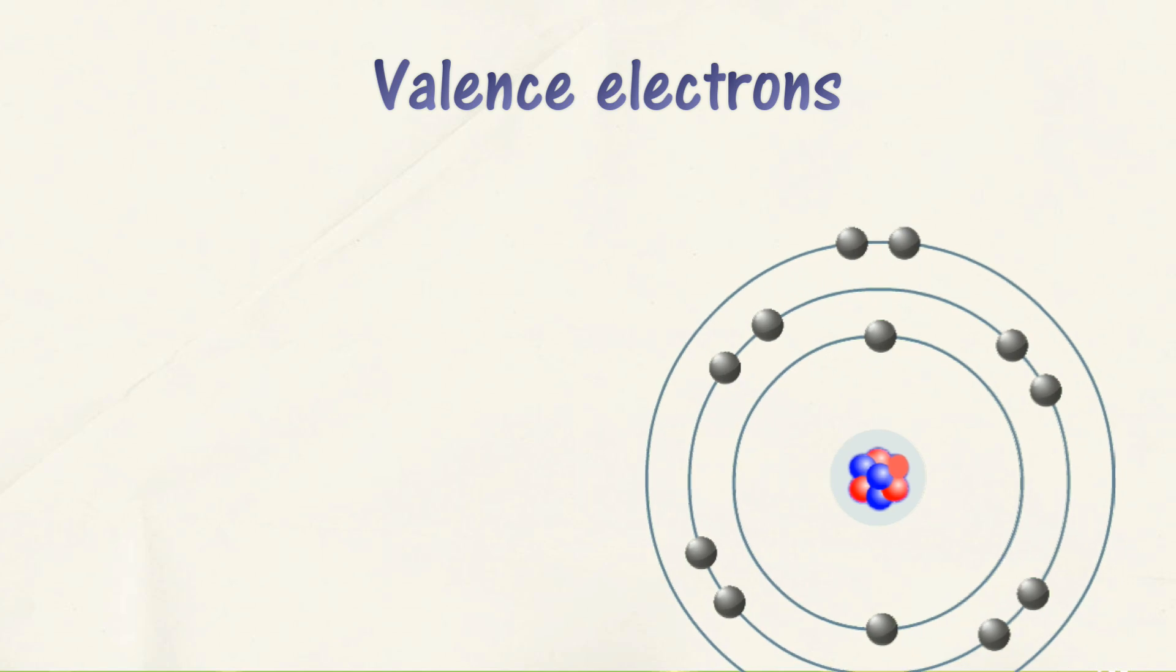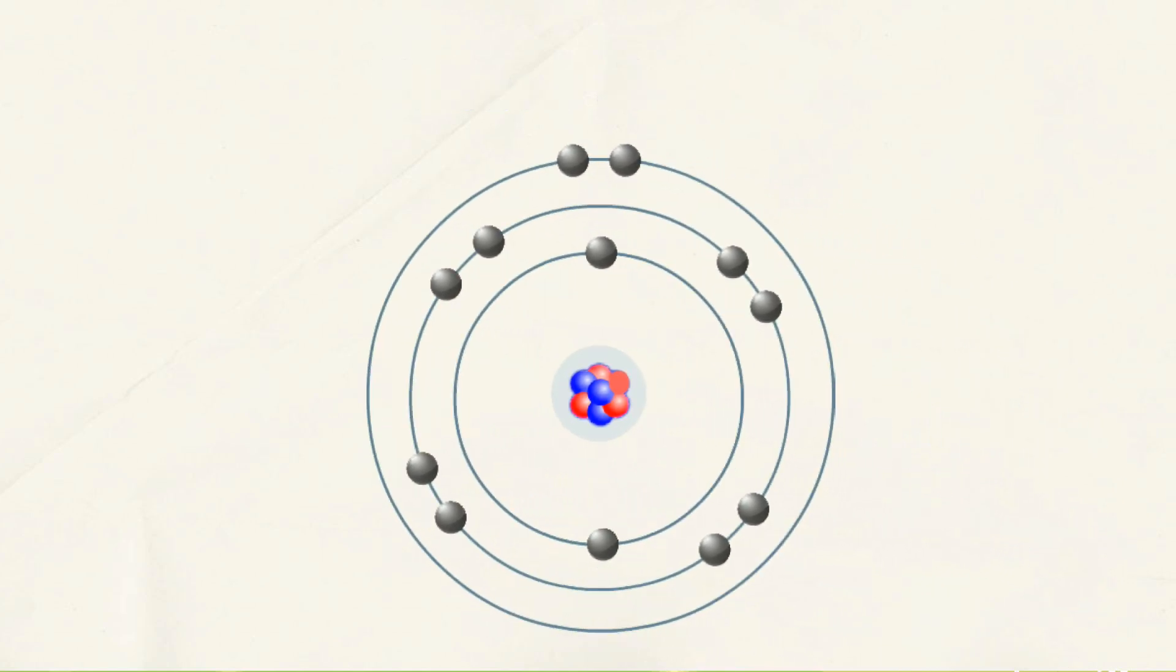Valence electrons are electrons in the outermost shell of an atom. The number of valence electrons is the number of electrons in the outermost shell of an atom. For example, atom magnesium has an electron arrangement of 2.8.2, so it has two valence electrons.